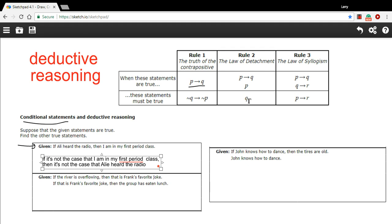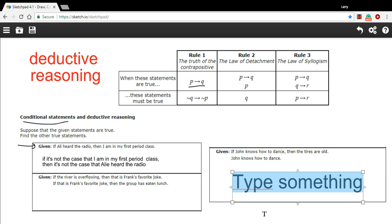This kind of rule you can see down here in this last one. It says if John knows how to dance, then the tires are old. And then it tells you John knows how to dance. Well, what that means is the tires are old. So that's what we can conclude from that one.